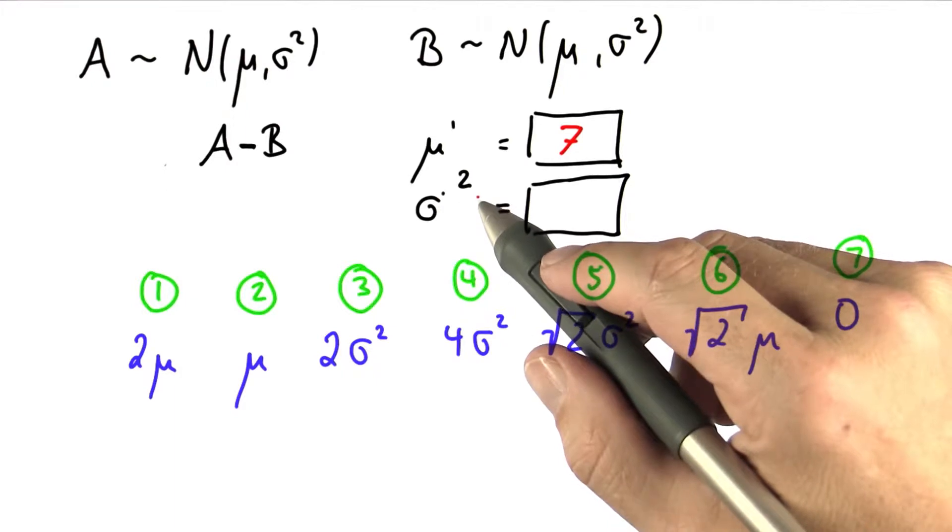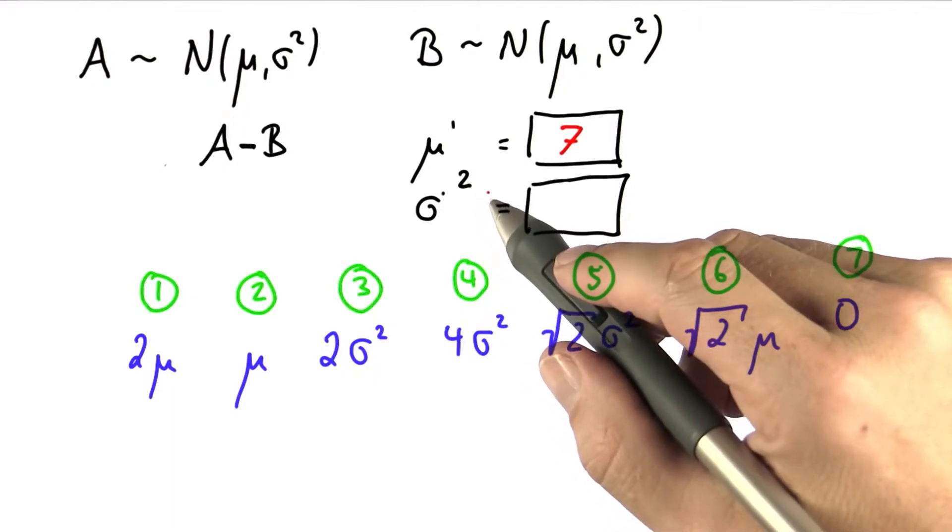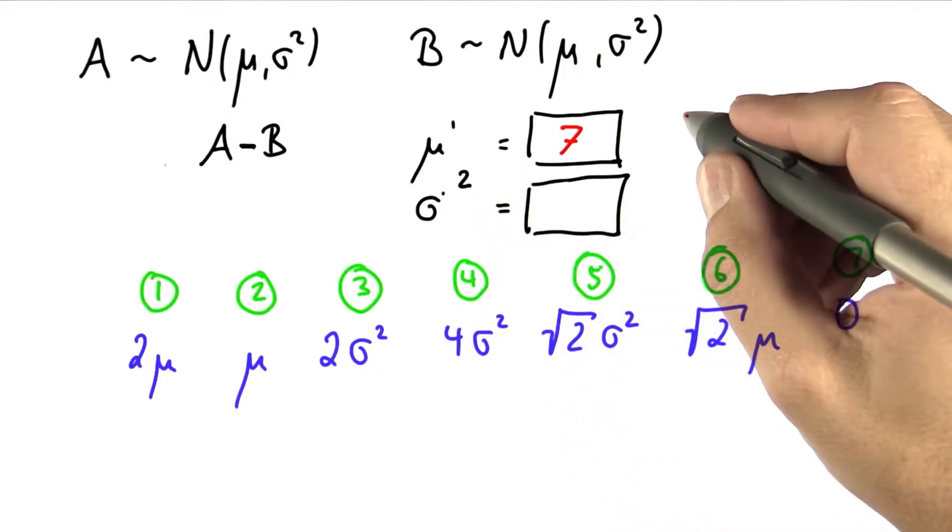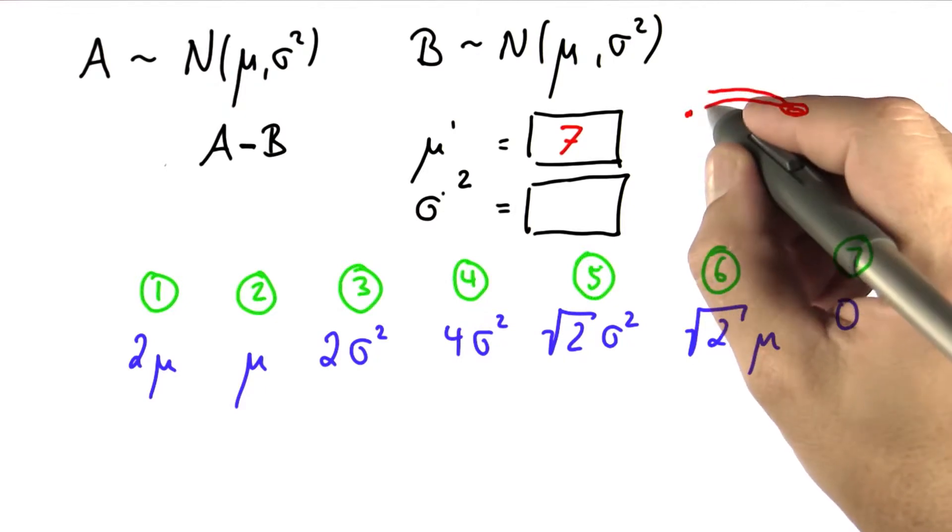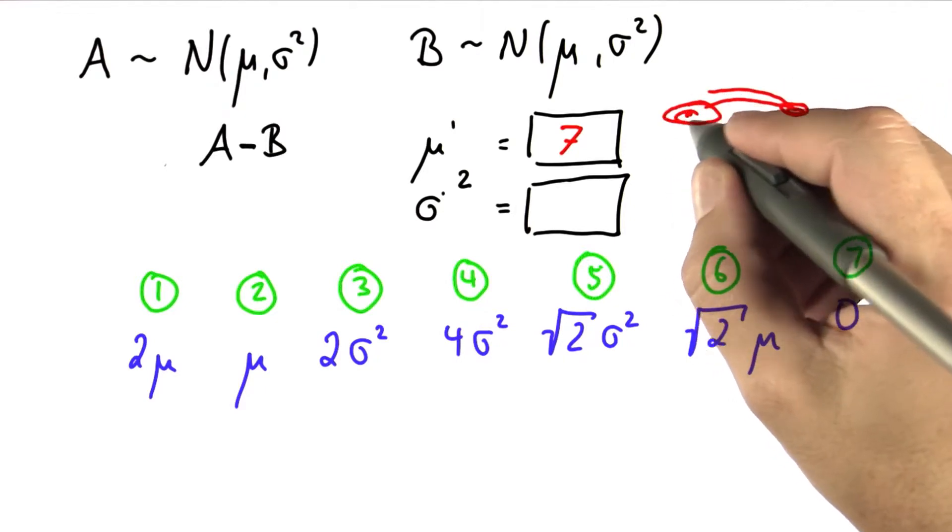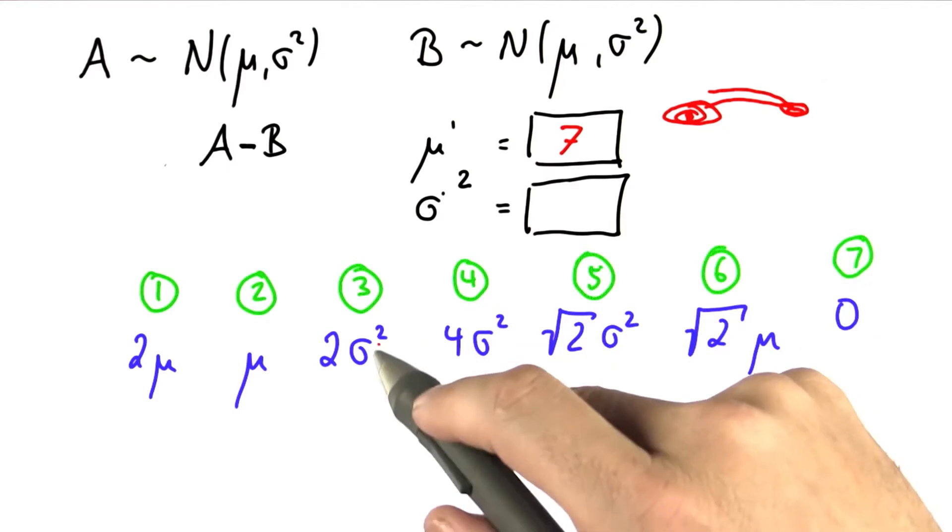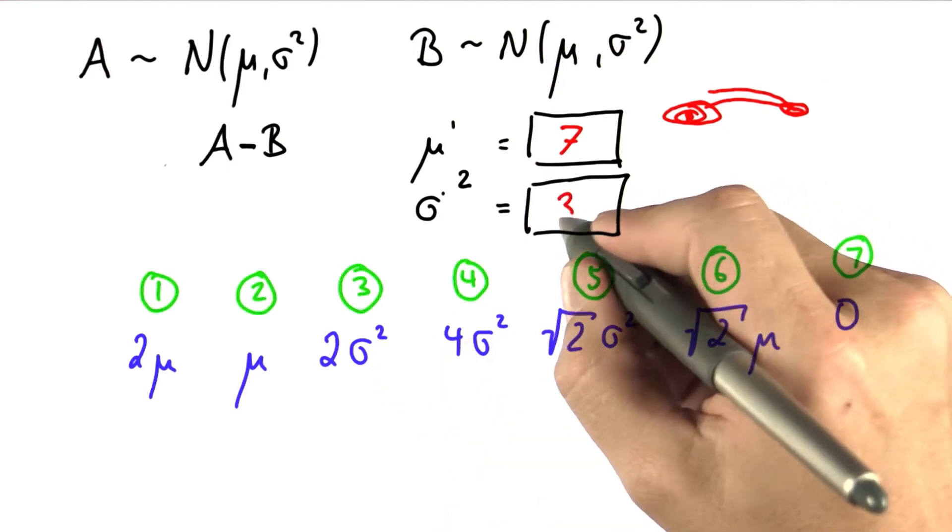Sigma prime squared is more difficult. It turns out the variances still add up. And the way to see this is, if you start over here at a well-defined zero position, and you go over here and you have some uncertainty, and then you hit the ball back over here, your uncertainty will increase. It won't decrease. That makes 2 sigma squared the correct answer.